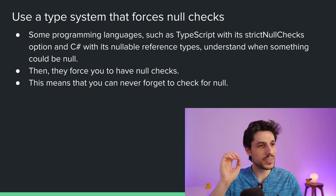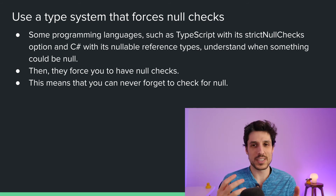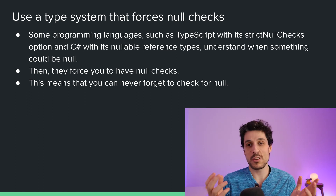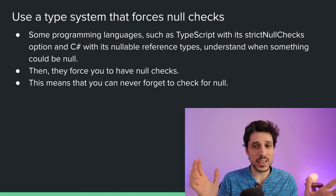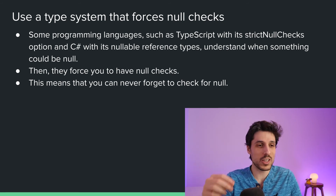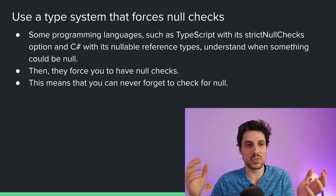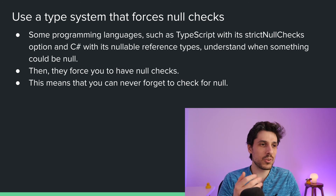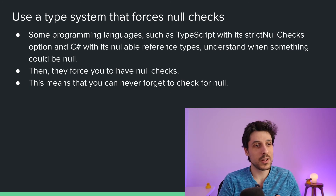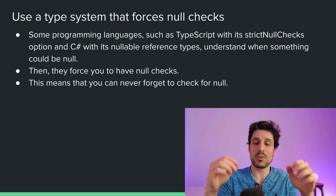A really good option is to use a type system that forces you to check for nulls. For example, in TypeScript, there's the strict null checks option. Anytime anything can be null, TypeScript will do static analysis on the code and force you, telling you: "hey, this can be null — make sure you have a null check here." For things that are not going to be null, it won't tell you that. So you'll only have the null checks that you need and you're never going to forget them. Another example is in C#, where you have nullable reference types — exactly the same thing: they notify you that something can be null and you probably need to handle it.